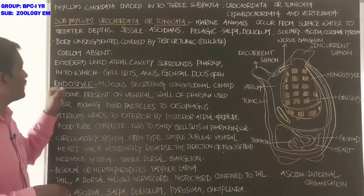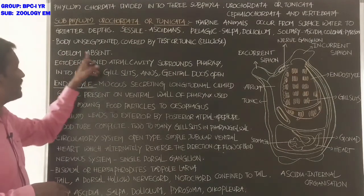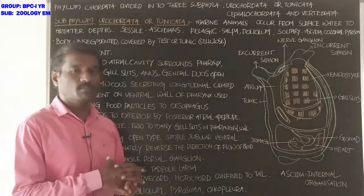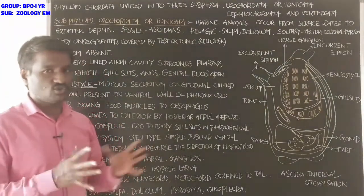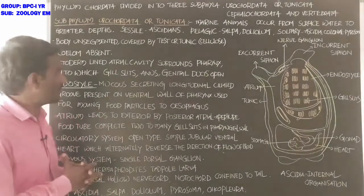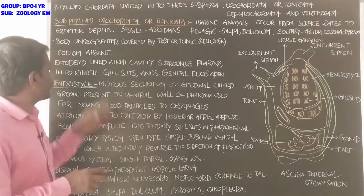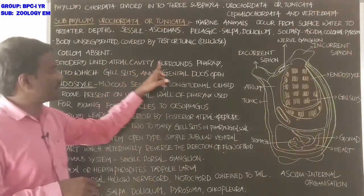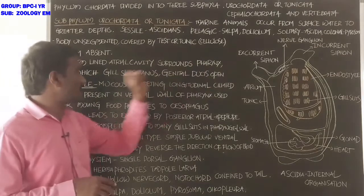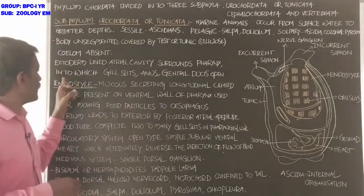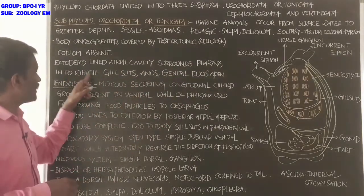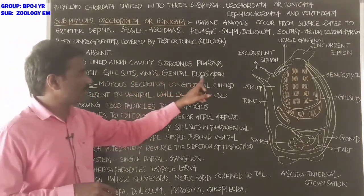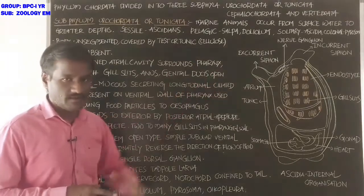Coelom is absent in these animals. Next, the ectoderm-lined atrial cavity surrounds the pharynx, into which gill slits, anus, and genital ducts are open.